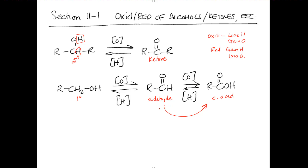Notice that a tertiary alcohol is missing from this scheme. That's because you cannot oxidize a tertiary alcohol — doing so would require a carbon-oxygen double bond with three alkyl groups, which would give five bonds to carbon, and that's not allowed. So only primary and secondary alcohols can be oxidized.